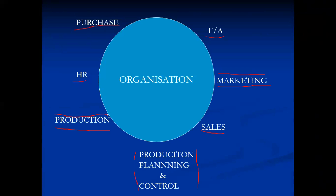Another problem: every department performs daily functions and requires information from other departments. For example, the production planning and control department's main daily function is to prepare a production schedule — a plan for when to start production, in what quantity, and by which date. To prepare this schedule, the production planning department needs information from the sales department — specifically, the date of delivery required by the customer.